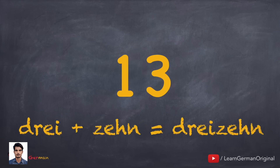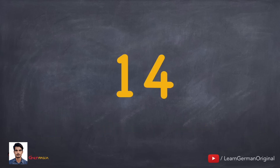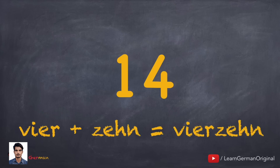Dreizehn. Numbers from 13 to 19 follow a simple rule: number plus zehn. Drei plus zehn gives you Dreizehn. Similarly, Vier plus zehn gives you Vierzehn.